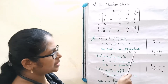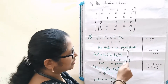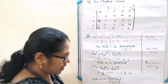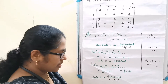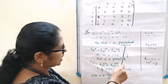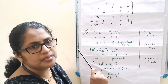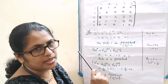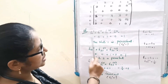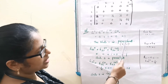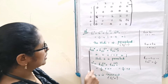That means state 1 is persistent. What do you mean by persistent? Fjj* equal to 1 — it is sure that the system will return to state J if it has started from J. So state 1 is persistent. Next, consider state 2.